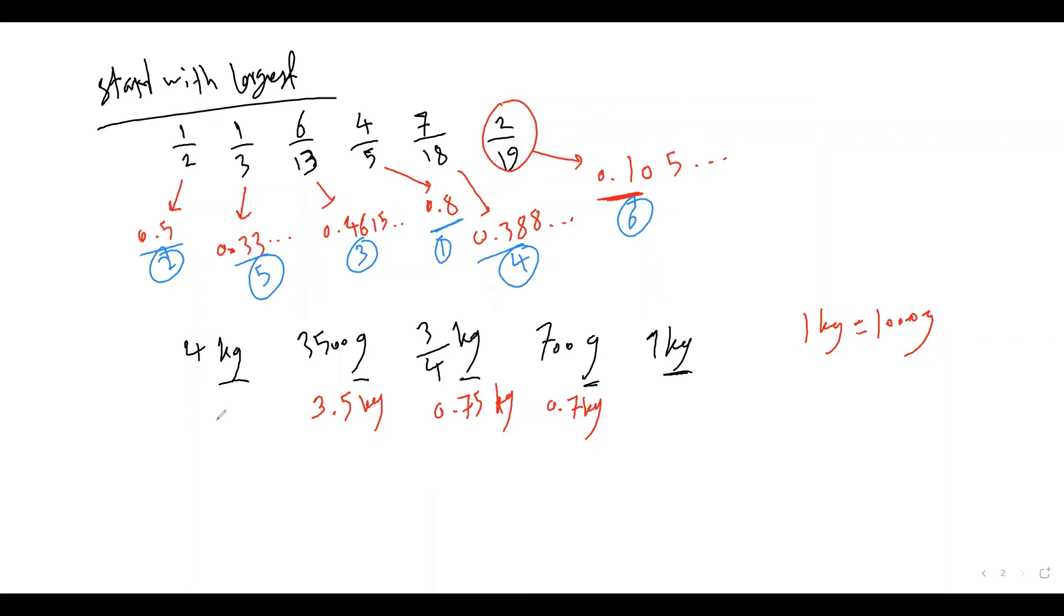Since they said from the largest, this should be number one, 4 kg, 3.5 kg. And then we move on to 1 kg. And between these two, this is 75 and this is 70. If you borrow one zero, this becomes number four, and the smallest of all would be 0.7. And I think this is it for this topic. Thank you for watching this video and good luck.